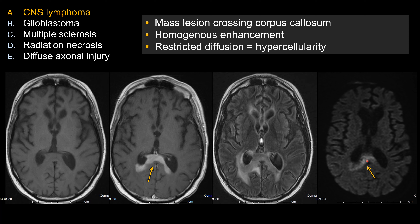There is also restricted diffusion, which for CNS lymphoma or other high-grade gliomas signifies hypercellularity. A key board exam point: CNS lymphoma has even lower diffusivity compared to GBM. The reason is that it is a small blue round cell tumor with a high nucleus-to-cytoplasm ratio, which further reduces diffusivity compared to other high-grade gliomas.